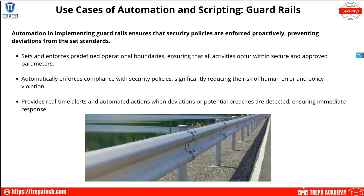Guardrails: automation and implementing guardrails ensures that security policies are enforced proactively, preventing deviations from set standards. This sets and enforces predefined operational boundaries, ensuring all activities occur within secure and approved parameters — giving us consistency, rapid response, and adaptability. A good example is SCAP, the Security Content Automation Protocol, which can set up guardrails for hardening to ensure CIS or STIG compliance.